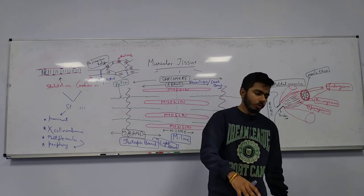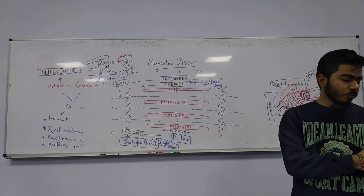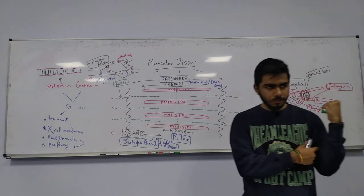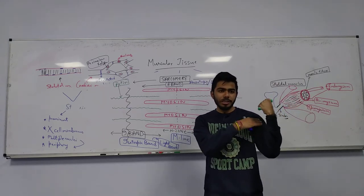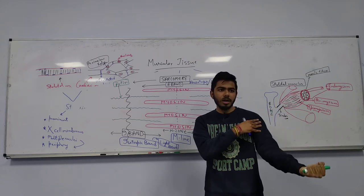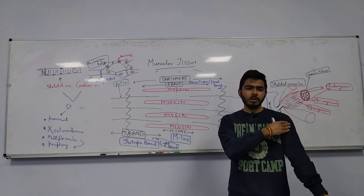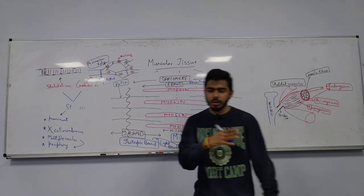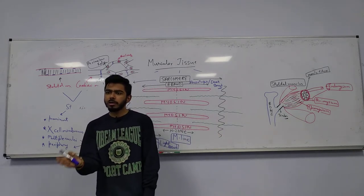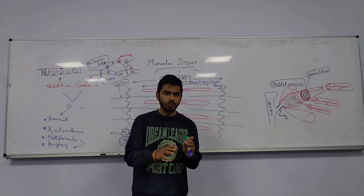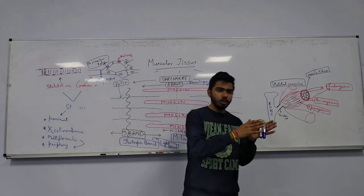For example, imagine lifting a dumbbell — that movement involves isotonic contraction. When you stop and hold still, that is isometric. Then lifting again is isotonic, and holding still again is isometric. So: if the length is changing, it is isotonic; if the length is not changing, it is isometric contraction.